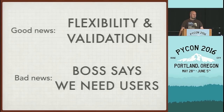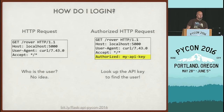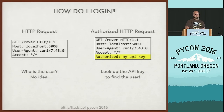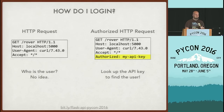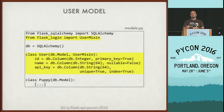We have flexibility and validation. But the boss has come back and said we also need API users so we can track who's using the API. We're going to integrate with Flask-Login for handling user support. The real question is: how do you determine who the active user is in an API request? The standard way is to provide some sort of information in the API request — an authorization header — to identify who is making that request. I'm making a new SQLAlchemy user model with an ID, a name, and an API key.